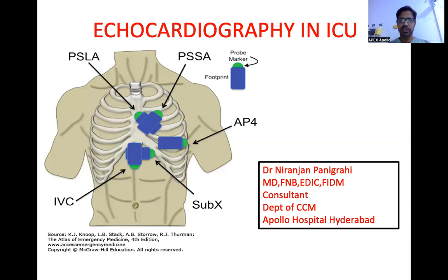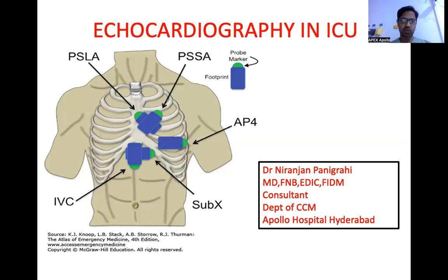The probe used is called the cardiac probe or phased array probe. One should be very clear about this: the reason the smallest probe is used is that the wave must pass through the narrow intercostal space between the two ribs — that is why the phased array probe is used. Coming to the windows or accesses: there are five windows through which the heart can be evaluated.